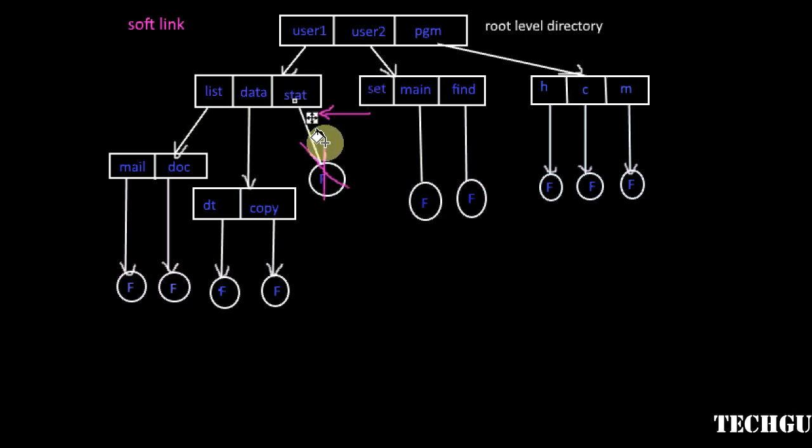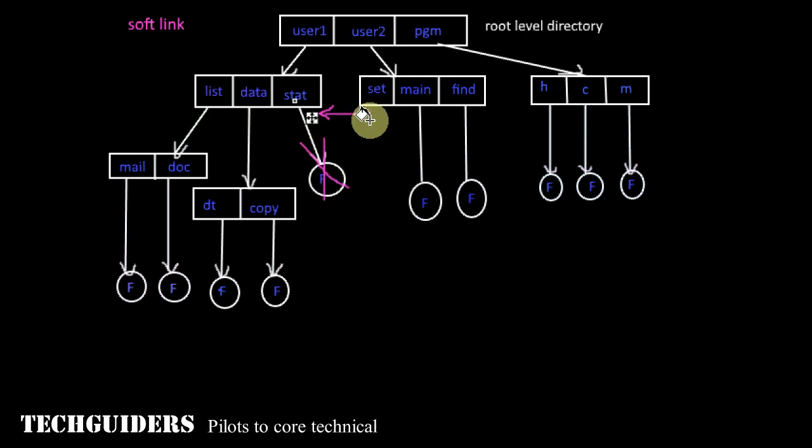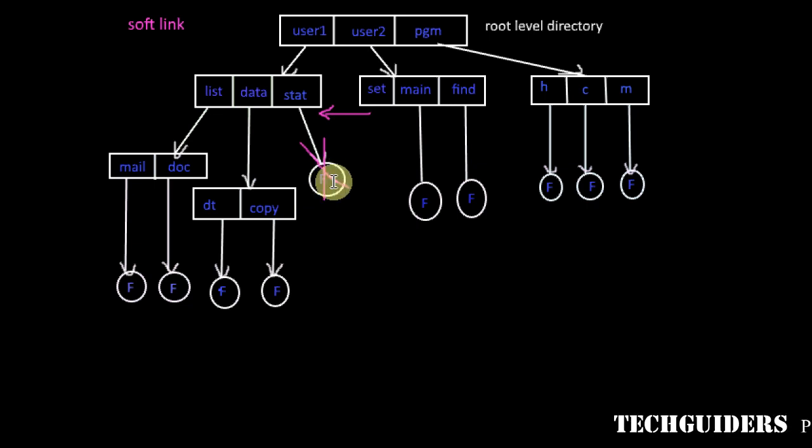And if the original file entry is deleted, then the disk space is deallocated and the links become dangling pointers. So either all the symbolic links to the file should be searched and removed, or every file should be kept associated with all the links associated with the file.